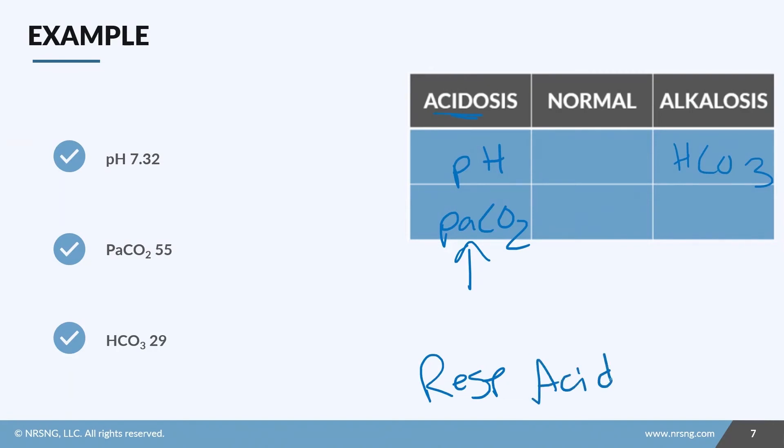Now, step three, is there compensation? Are both the bicarb and the CO2 abnormal? Yes, they are. But the pH is still abnormal. So it's only partially compensated. Now, here's where this tic-tac-toe trick comes in. We know that it is a partially compensated condition if the normal column is completely empty. Okay? So that's your partial compensation tic-tac-toe trick. A completely empty normal column means you have some sort of partial compensation.